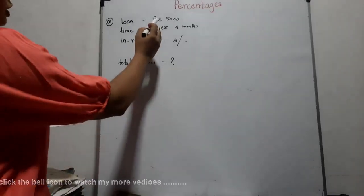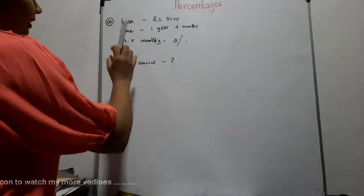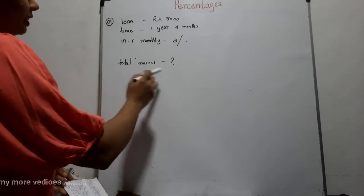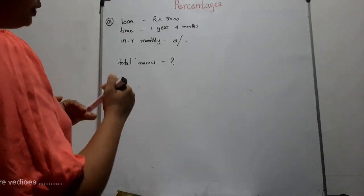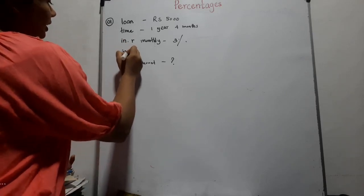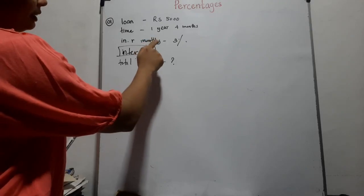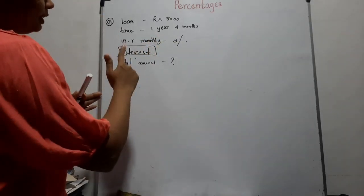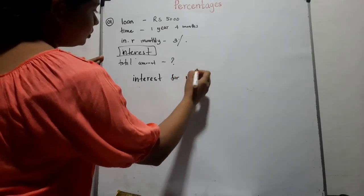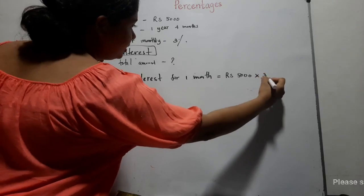In the 2nd question, Gamini has borrowed 5,000 rupees. The time period is 1 year and 4 months. The interest rate is given monthly — 3% per month. You are asked how much he has to pay to settle the loan, meaning the total amount. The total amount means the sum of the interest and the loan amount. Before finding the total amount, we have to find the interest for 1 year and 4 months. Since the interest rate is given monthly, we calculate the interest for 1 month first. The loan amount is 5,000 multiplied by 3 over 100, giving 150 rupees.